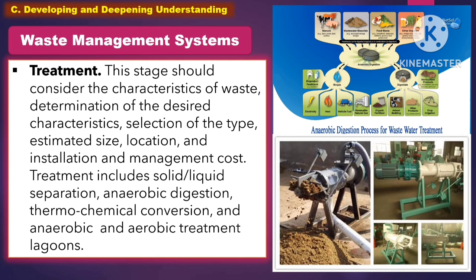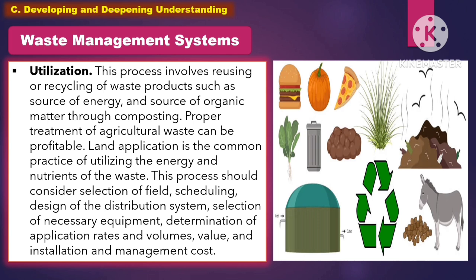Treatment includes solid and liquid separation, anaerobic digestion, thermochemical conversion, and aerobic and anaerobic treatment lagoons. Utilization involves the reusing or recycling of waste products, such as a source of energy and source of organic matter through composting. Proper treatment of agricultural waste can be profitable. Land application is the common practice of utilizing the energy and nutrients of the waste. This process should consider the selection of field, scheduling, design of the distribution system, selection of necessary equipment, determination of application rates and volumes, and installation and management cost.